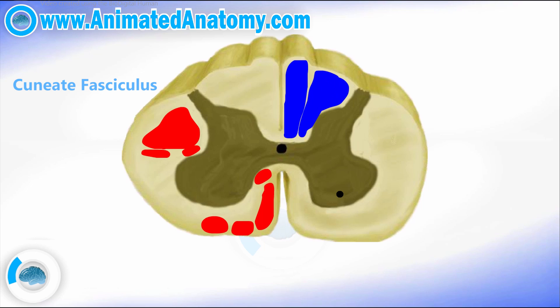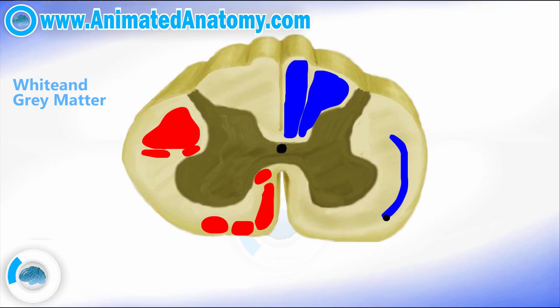I'm sorry I started this video without previously explaining what you were looking at. If you look here, this is the white matter — this is where the axons are. They conduct the signal; they are in a myelin sheath, which makes them conduct the signal much faster. Here you have the gray matter — this is where the cell bodies are.